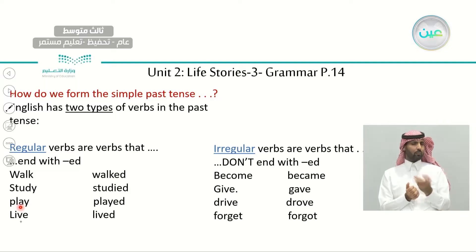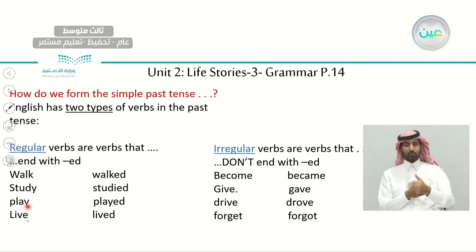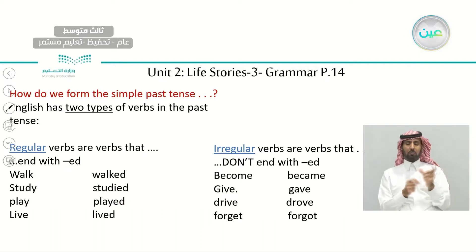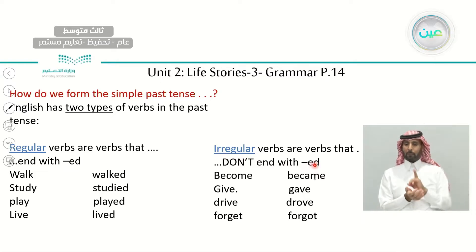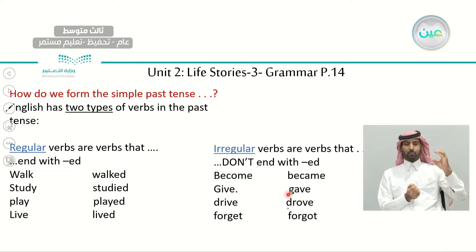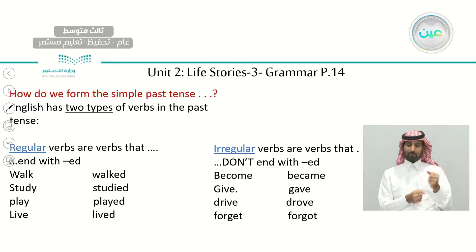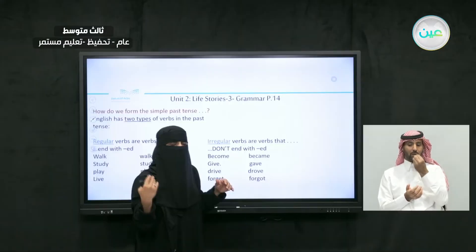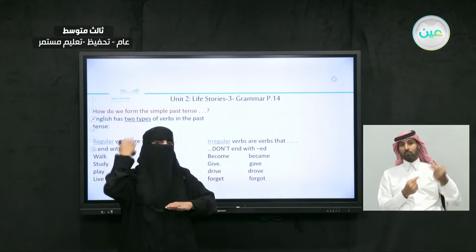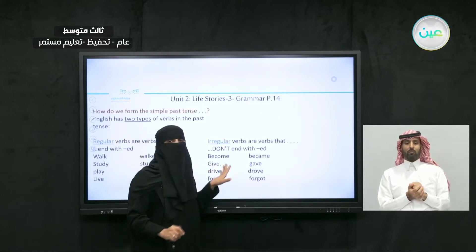The other type is irregular verbs — they don't take '-ed' at the end. For example: become → became, give → gave, drive → drove, forget → forgot. Can you think of other irregular verbs? You told me before: I ate yesterday. The present is 'eat,' so when we talk about the past, we change it to 'ate.' We don't add '-ed' — it's an irregular verb.